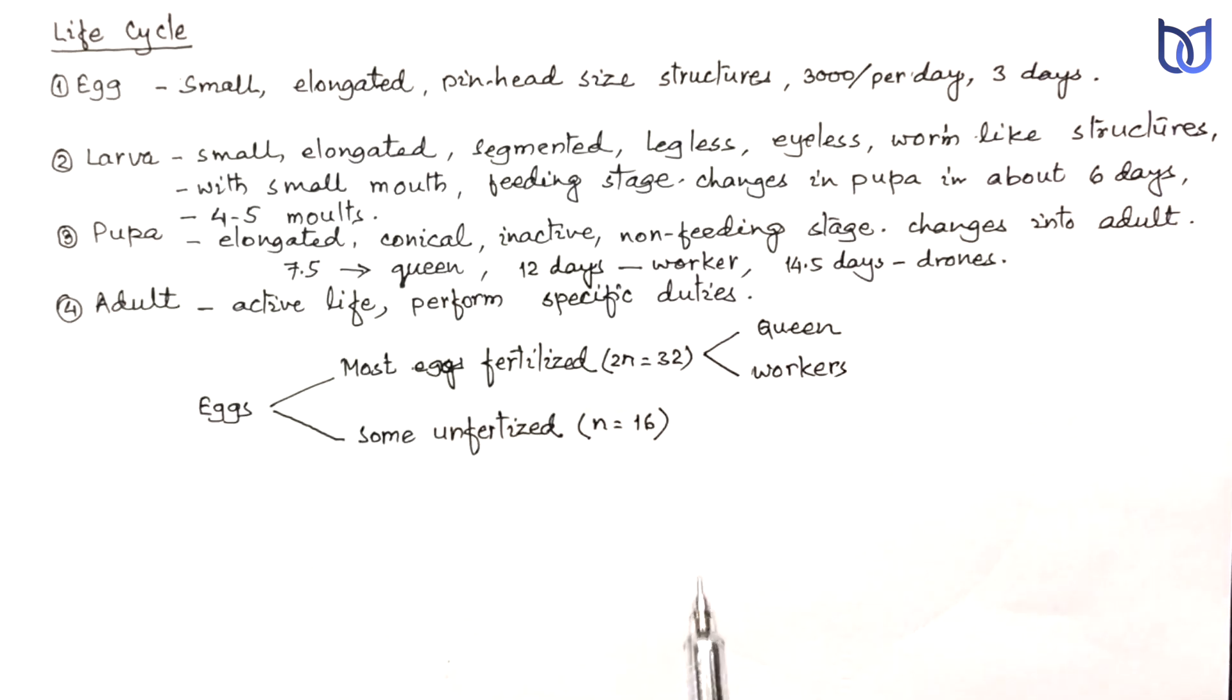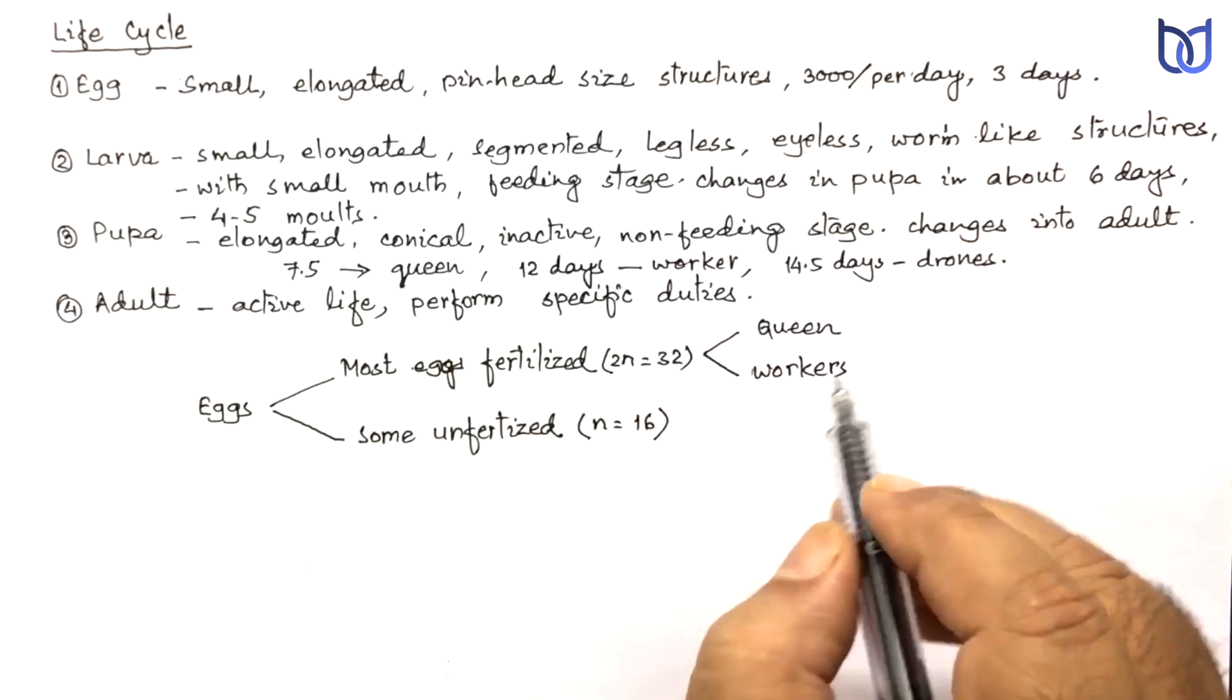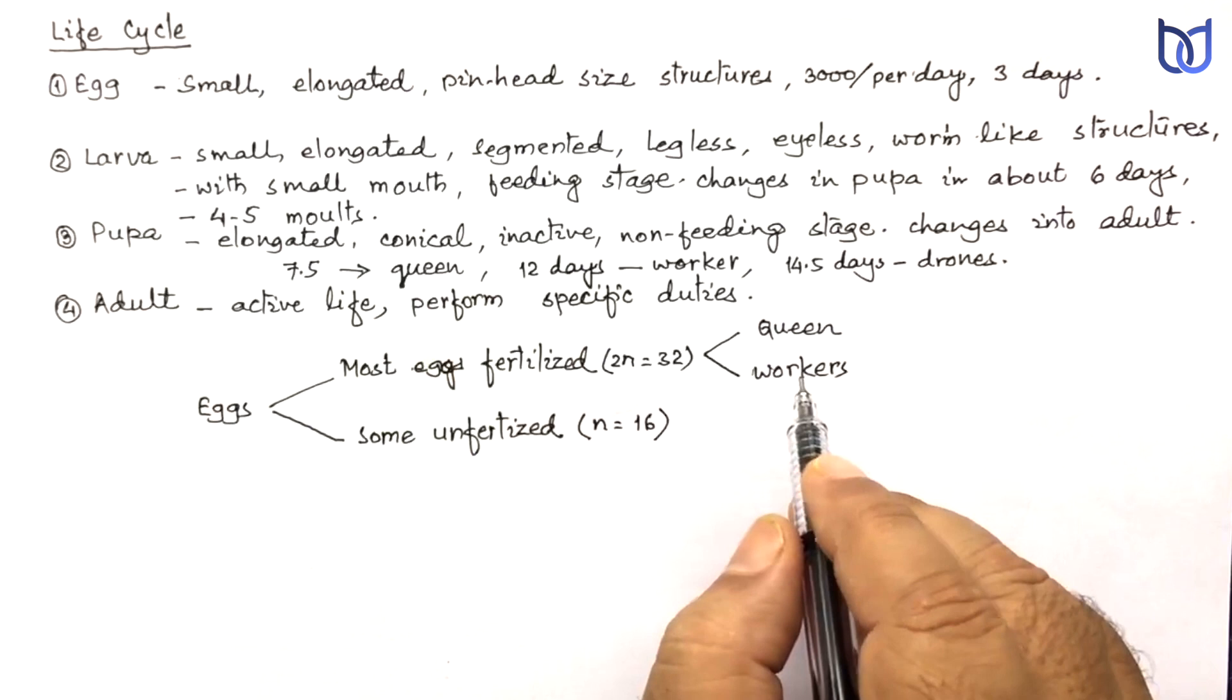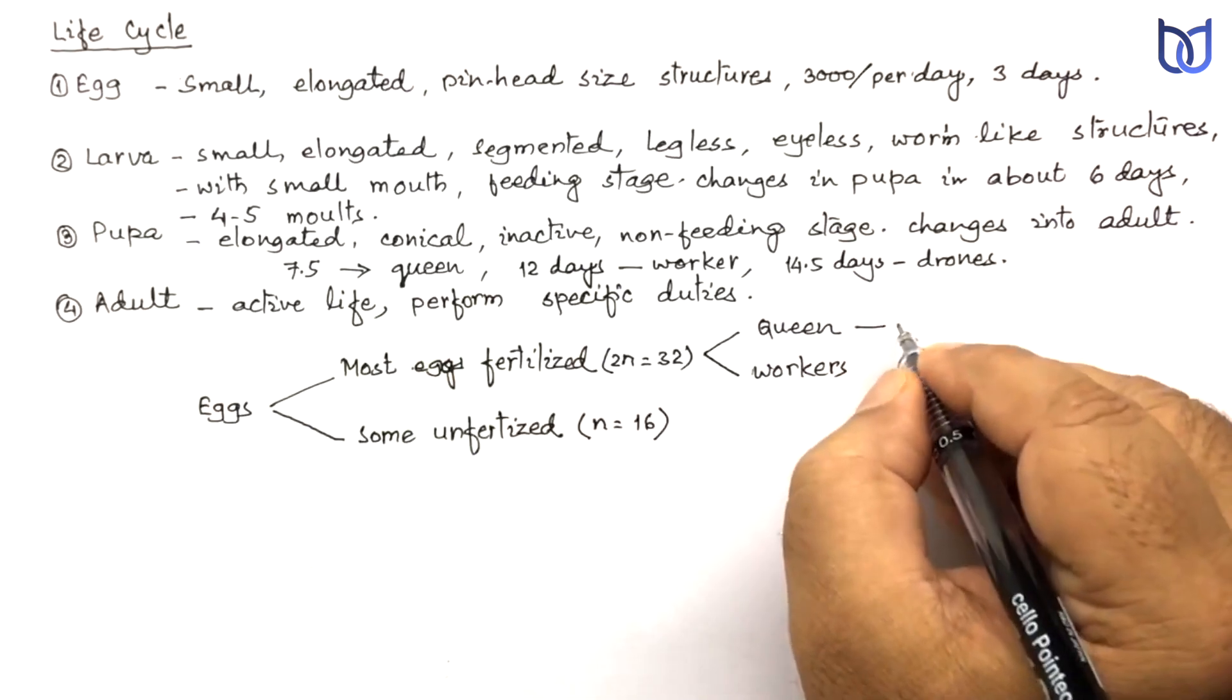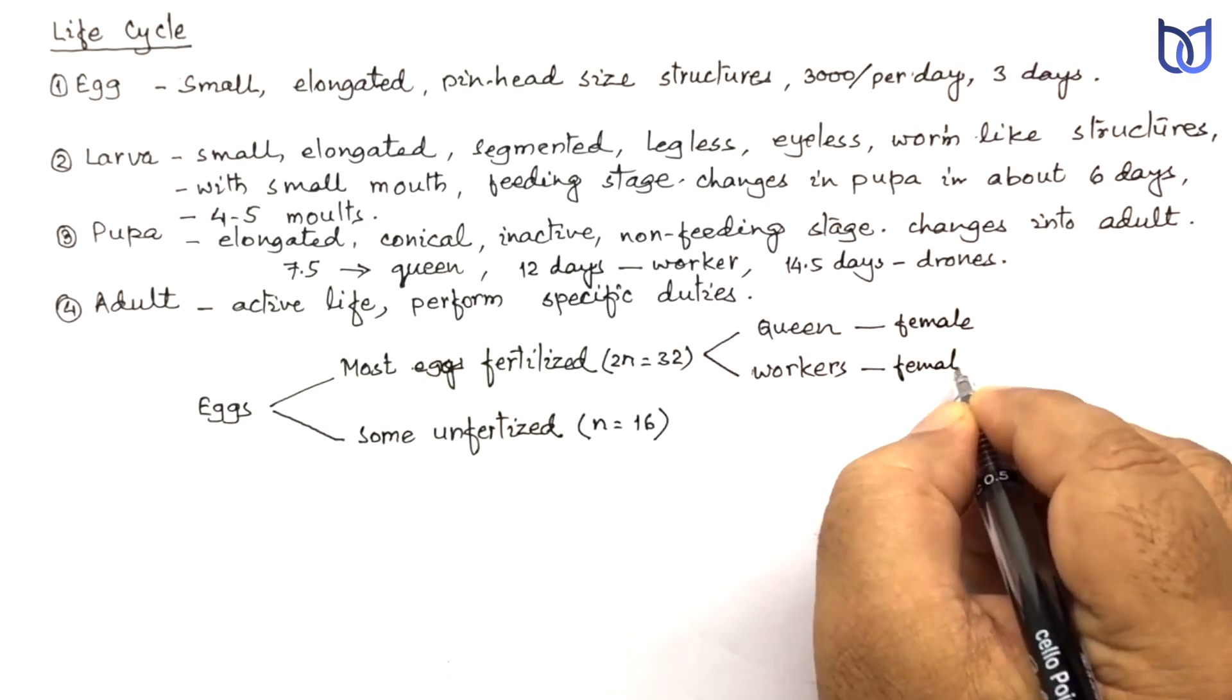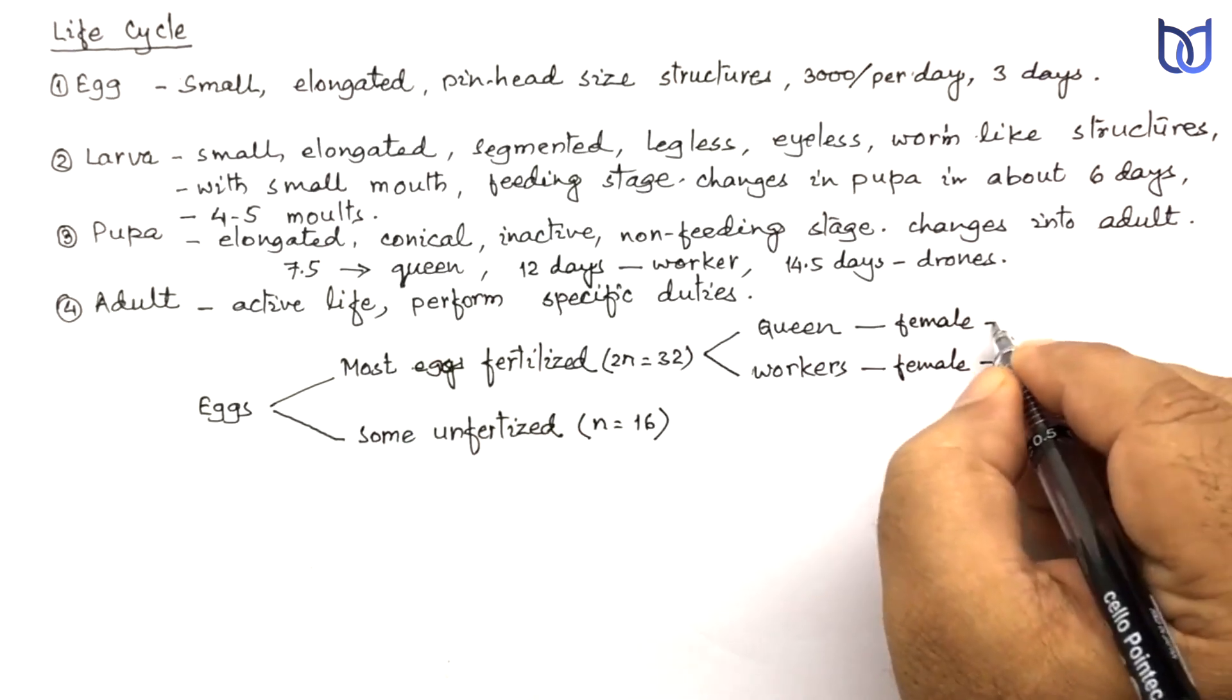The fertilized eggs develop into queen or workers. When fed with royal jelly during larval stage, the fertilized eggs develop into queen. And if the larva is fed with royal jelly and bee bread, then it develops into worker. In both cases, the queen and workers are both females. The worker performs all the duties of the hive except reproduction.